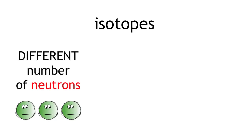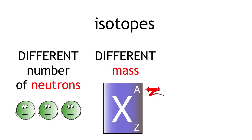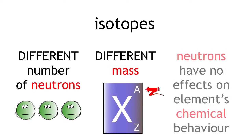Isotopes only differ in their number of neutrons and their mass. Their chemical properties are exactly the same because neutrons have no effect on an element's chemical behaviour. This is controlled by electrons which we will discuss in another video.